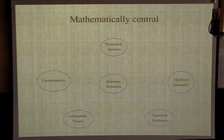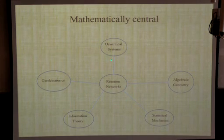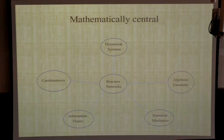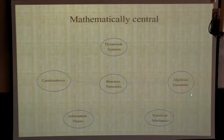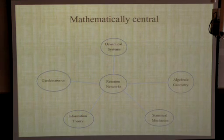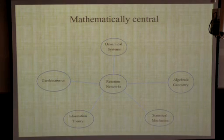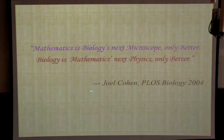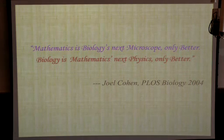Pursuing the global attractor conjecture requires connections with ideas from many different areas. The Lyapunov function reminds one of relative entropy and Helmholtz free energy from statistical mechanics; ideas from algebraic geometry and combinatorics come in as well. This is one of the nice things about reaction networks — they seem to be mathematically central, leading to interesting questions that are valuable in their own mathematical right, apart from biology. Biology is indeed mathematics' next physics, where we find interesting questions for mathematics to investigate.